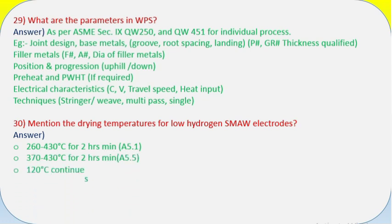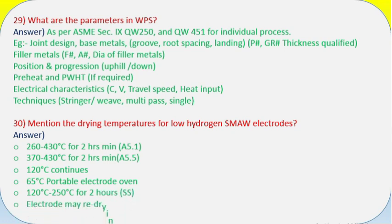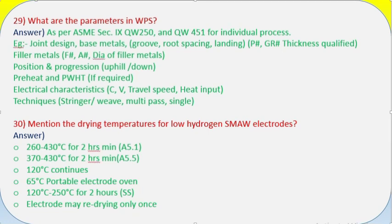Question 30: Mention the drying temperatures for low hydrogen small electrodes. Answer: 260 to 430 degrees Celsius for 2 hours minimum E5.1, 370 to 430 degrees Celsius for 2 hours minimum E5.5, 120 degrees Celsius continuous, 65 degrees Celsius portable electrode oven, 120 degrees Celsius for 2 hours minimum E5.1, 430 degrees Celsius for 2 hours minimum E5.5. Electrode may be re-dried only once.